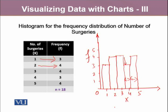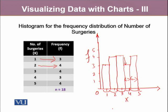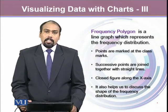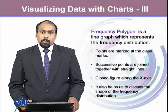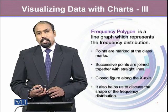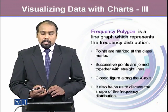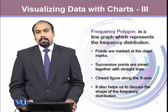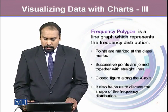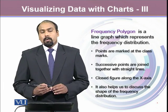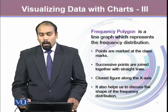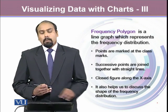The frequency histogram helps us to look at the shape of the data. The next type of chart is frequency polygons. Frequency polygons are a type of line chart that represents the frequency distribution in the form of a line chart, where we first mark points at the class marks and then join all successive class marks with straight lines. A frequency polygon is a closed figure, where on both ends we extend the diagram all the way to the x-axis. It also helps to discuss the shape of the frequency distribution.